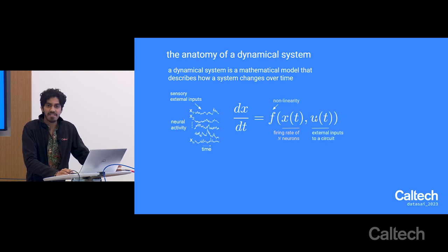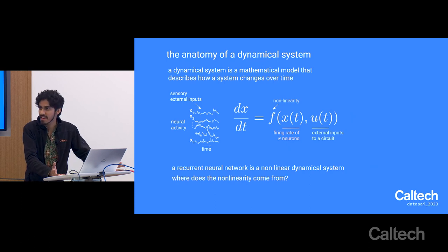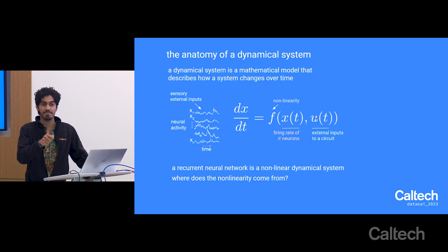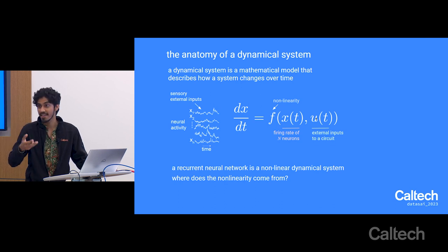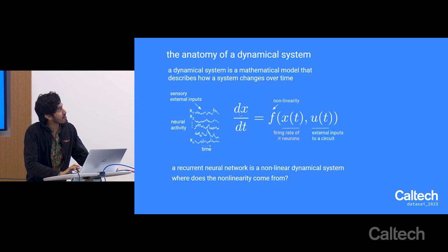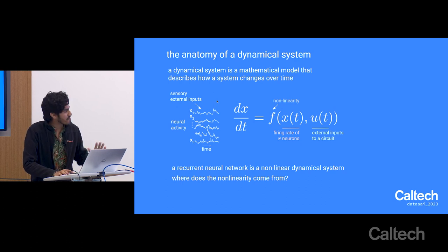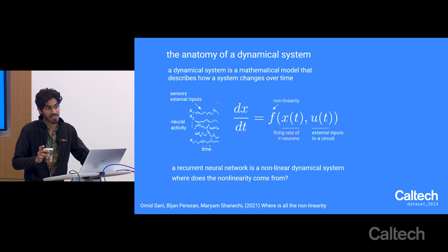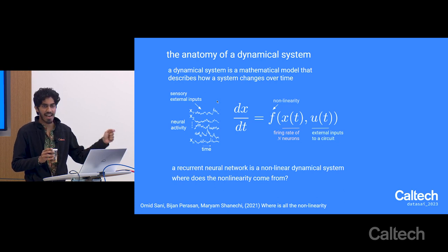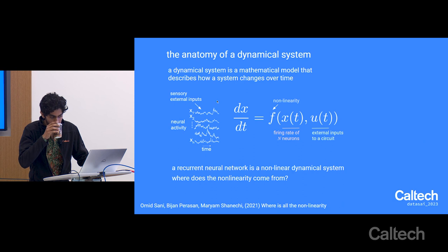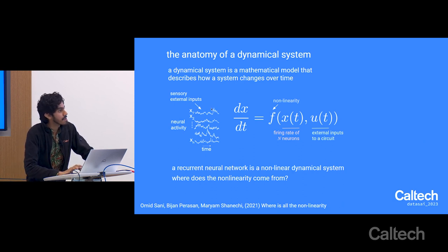Where does the nonlinearity come from? Neurons are nonlinear—you give them some input, they don't spike until a particular threshold. You can also think of nonlinearity existing in the transformation from behavior to latent space. Mariam Shinichi, who will be talking later this week, has a paper asking 'where's all the nonlinearity?' because often we can get away with simpler linear systems. But in reality, every system is actually nonlinear in nature.